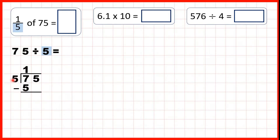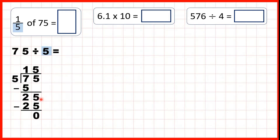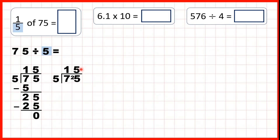And because that's 1 times 5, we write 1 in our answer line. Now, we subtract, and 7 minus 5 is 2. We can bring down this 5, and we have 25 divided by 5. That's exactly 5, because 5 times 5 is 25. We could also use short division. So, 7 divided by 5 is 1 remainder 2, because 1 times 5 is 5, and to get to 7 we need to add 2. Then, 25 divided by 5 is 5. So, 1 fifth of 75 is 15.